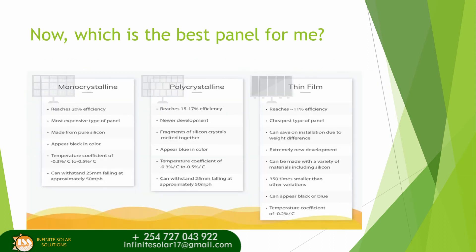The characteristics of monocrystalline include: an efficiency of about 20 percent, it is the most expensive type of panel in the market, it is made from pure silicon and is black in color, with a temperature coefficient of about negative 0.3 to negative 0.5 percent. It can withstand hail of about 25 millimeters falling at approximately 50 miles per hour.